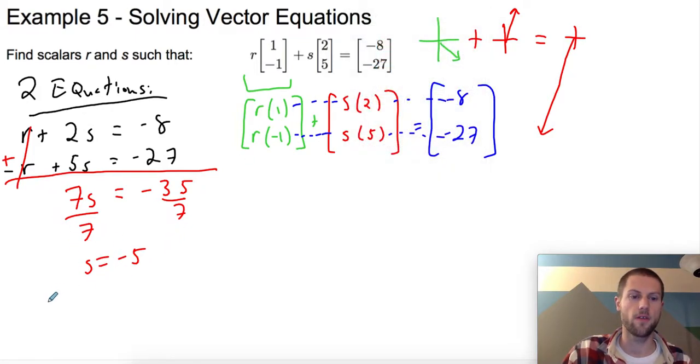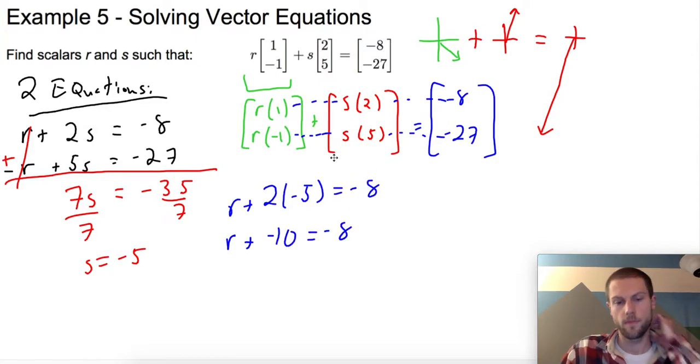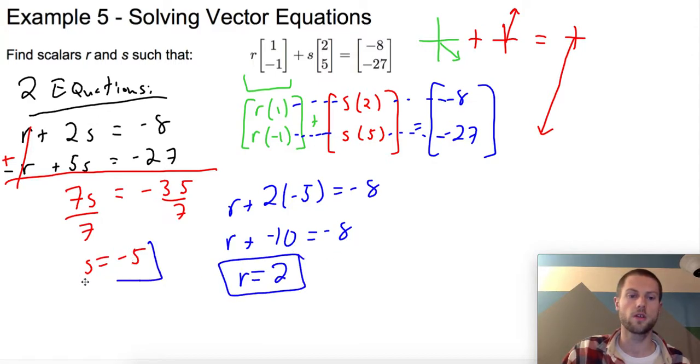So we're going to just plug it back in to one of my original equations. So if r plus 2 times my s which is -5 equals -8, so r plus -10 equals -8. And it looks like that's going to make r equal to 2. So those are my two scalar values that make this equation in component form true. You could check this by actually plugging in my r's and my s's to verify it for yourself. But that's how I would get this final resultant (-8, -27).